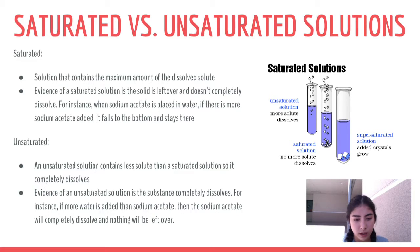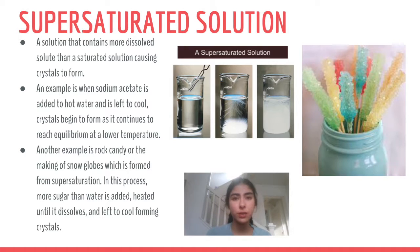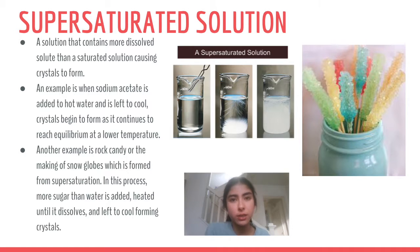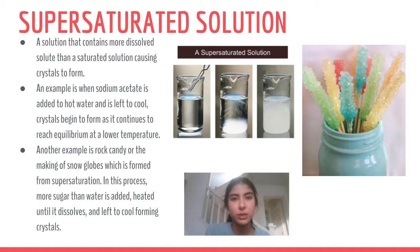A supersaturated solution contains more dissolved solute than a saturated solution, causing crystals to form. A solid is heated until it dissolves completely, and since it's a solid, increased temperature leads to increased solubility. An example is sodium acetate added to water and heated until it dissolves completely — when left to cool, crystals start to form as it reaches solution equilibrium at a lower temperature. This is also how rock candy is made, and it's what we did in class with the snow globes.